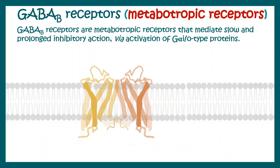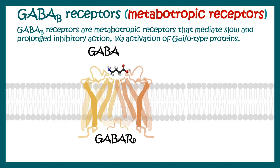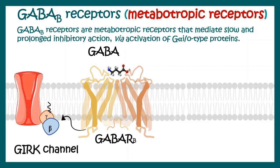We can also find another example in the GABAergic system. The GABA-B type receptor is actually an example of a metabotropic receptor and it works via the Gi type of G protein. GABA binds to the GABA-B receptor, triggering the G protein to dissociate into the beta-gamma segment and the G-alpha segment. The beta-gamma segment activates GIRK channels — potassium channels — leading to outflux of potassium, thereby decreasing neuronal activity and having a prolonged inhibitory action.